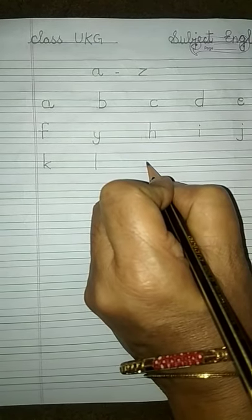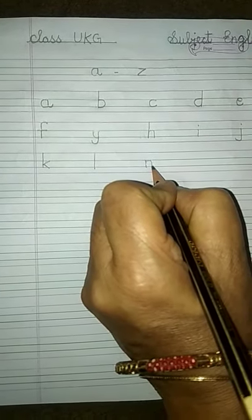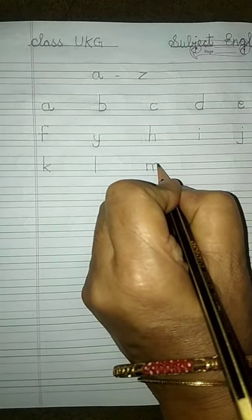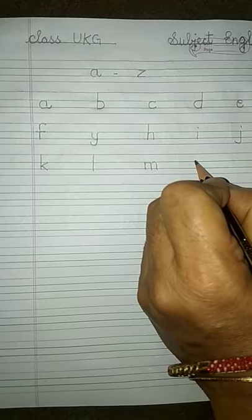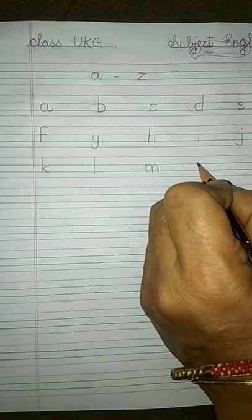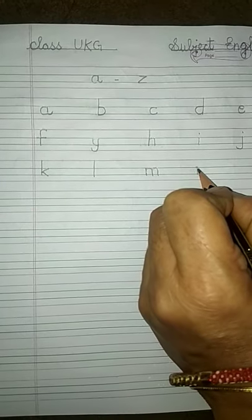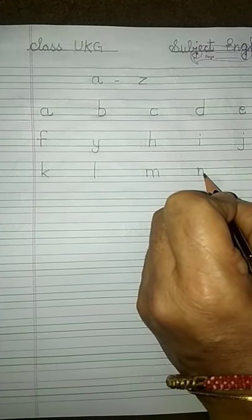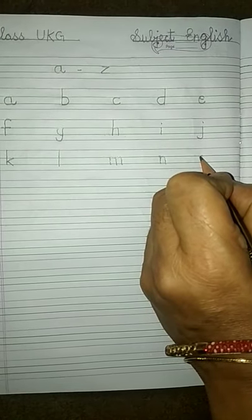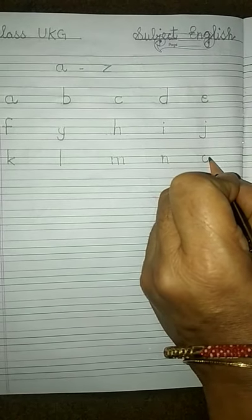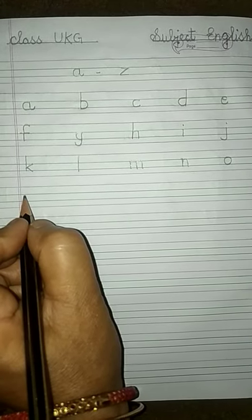N — one standing line in between the two blue lines and one small curve coming downward: N. One small circle in between the two blue lines: O.